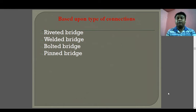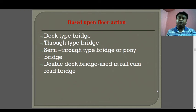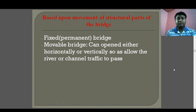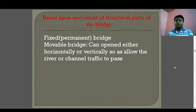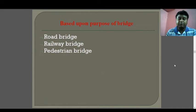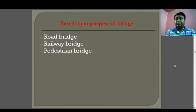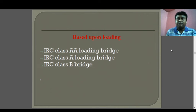Based on floor action: deck type, through type, semi-through type, and pony bridges. Double deck bridges are used in rail-cum-road bridges. Based on movement of structural parts: fixed bridge, permanent bridge, or movable bridge, which can be found in some places in Kolkata. Based on purpose: road bridges, railway bridges, or pedestrian bridges. These three purposes cover all uses of bridges.